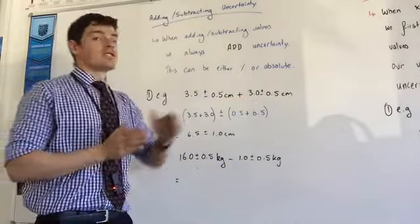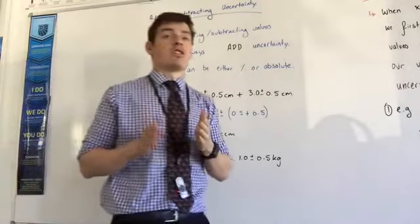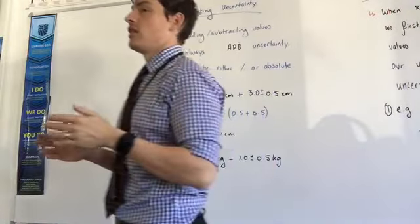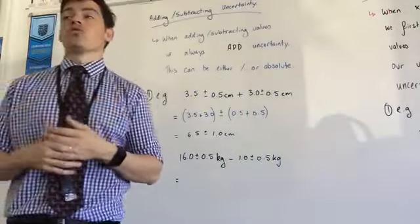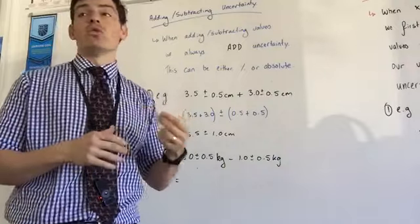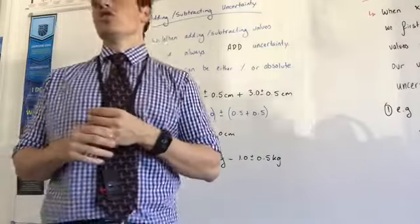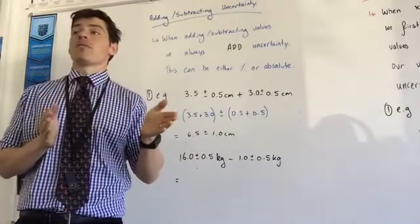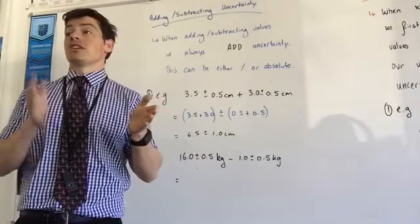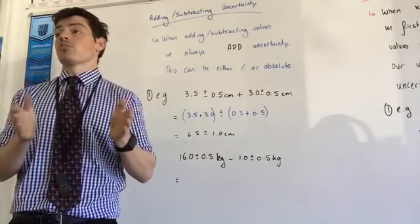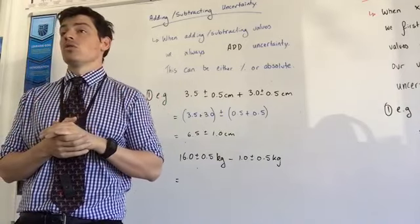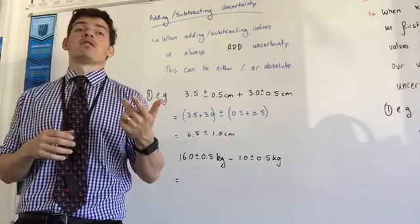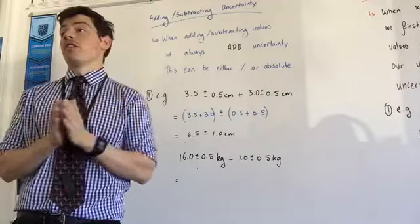The second value is 3 centimeters long plus or minus 0.5, which means it could be 2.5 or it could be 3.5. Now because we're scientists we need to assume the worst case scenario, we need to account for all scenarios that could occur. So we could be in a situation where this thing is 2.5 centimeters plus 3 centimeters. They're the shortest lengths it could possibly be, correct? How big would that be? 2.5 plus 3?